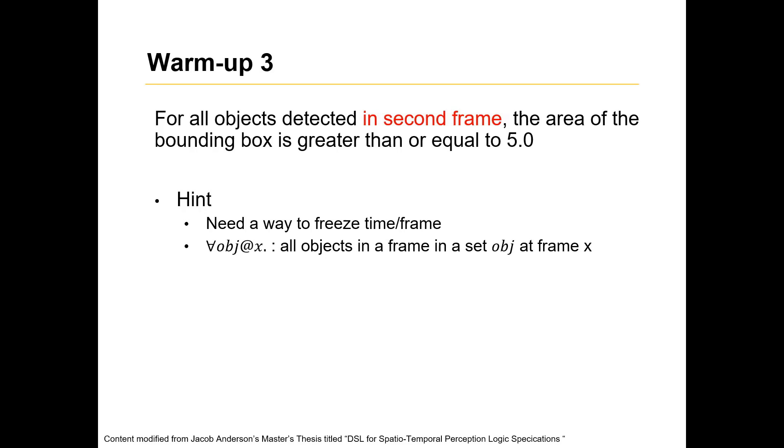So how the STPL language deals with it is using this specific notation. So what it says is, for all objects, at a particular time X. So if you go into the monitoring language backend, X basically is a dictionary, which has both frame and time information. So it could, it basically takes information based on the context. But here, what I want you to take away, is that it's basically saying, for all objects, at a particular frame X. And then how do we formulate our next requirement?